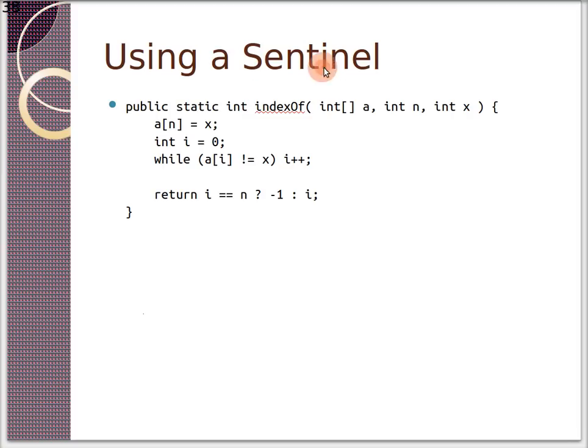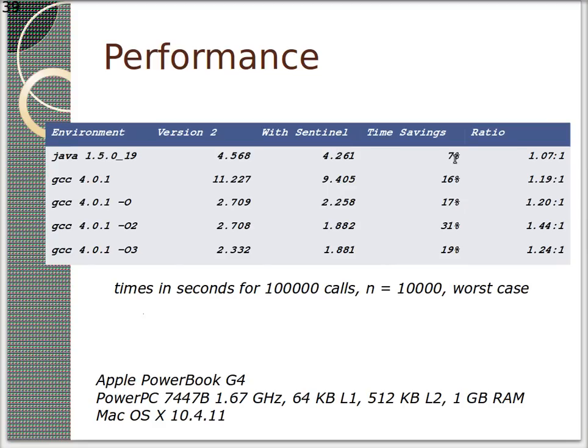So this is using a sentinel. And really, what a sentinel means is a special value. Like in C strings, we use null. But here, we're just using x itself. So it'll eventually find itself. If we look at the performance of these different versions, version two versus the sentinel version, the sentinel version in Java, we save about 7%. With GCC, we save even more. So this is pretty interesting. So we can actually have some savings with the sentinel approach. Of course, this is relatively old hardware.